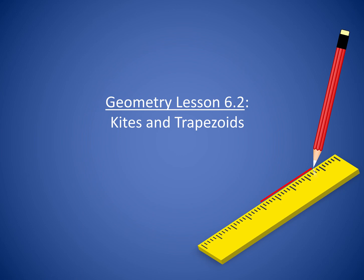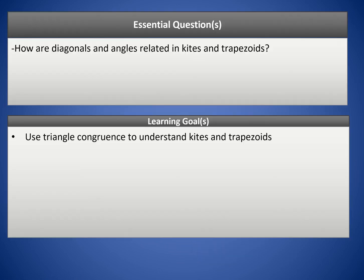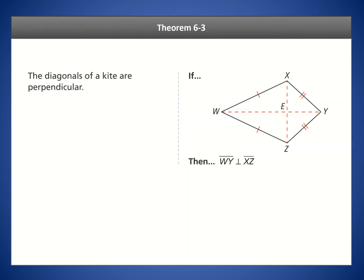Hello class. Welcome to lesson 6.2. We're going to talk about kites and trapezoids today. Our question is: how are diagonals and angles related in kites and trapezoids? Our goal is to be able to use triangle congruence to understand these two quadrilaterals.